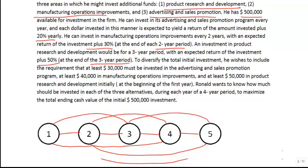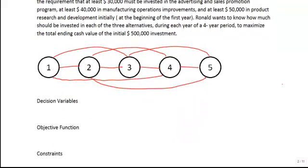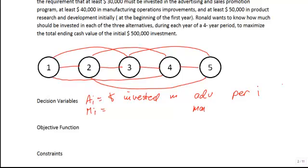That gives us three different types of decision variables. We'll call A_i the money invested in advertising in period i, M_i the money invested in manufacturing in period i, and R_i the money invested in research and development in period i. Our goal is to determine how much to invest in each of the three alternatives during each year of the four-year period to maximize the total ending cash value of the initial investment.